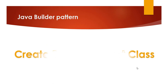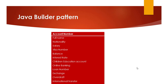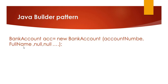Let's take our example. If we need to create a bank account class, this class will contain a large number of parameters like nationality, salary, visa number, online banking, and loan number. Not all are mandatory — some are mandatory, others are optional. So we need to find a best practice to create or instantiate an object of the account. The first approach is: bank account acc = new BankAccount and add all parameters, assigning null for unrequired optional parameters — but this is not good practice.